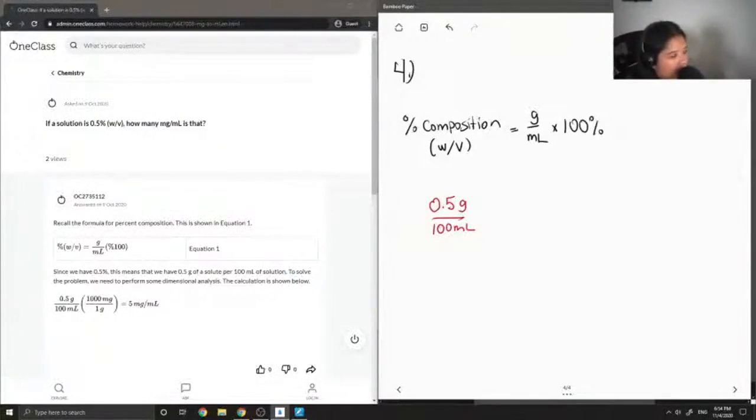So I'm just going to convert this from grams to milligrams. And to do that I'm going to use the conversion factor of 1000 milligrams per 1 gram. Then if I multiply it out, I'll notice that my grams cancel out. And then I'm left with 5 milligrams per milliliter.